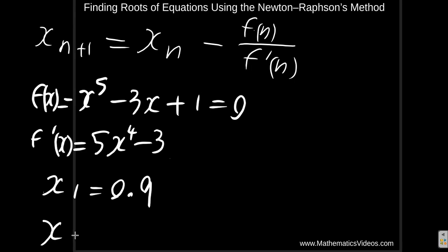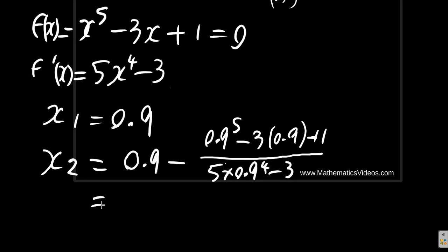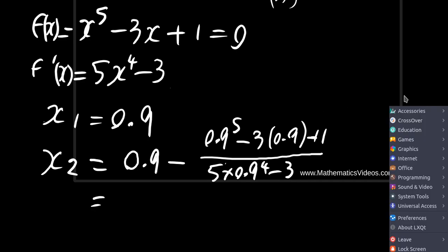Now, xn plus 1, remember this is xn, n is 1, n plus 1 would be x2. It's equal to our x1, 0.9 minus our f of 0.9 would be 0.9 to the 5th minus 3 times 0.9 plus 1 divided by 5 times 0.9 to the 4th minus 3. Let's use our calculator to see what that will give us.